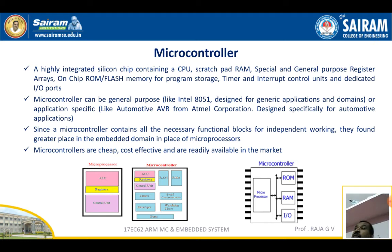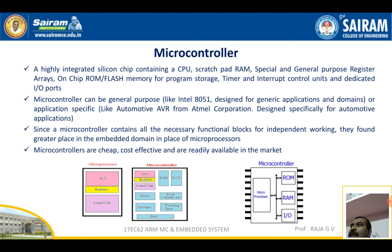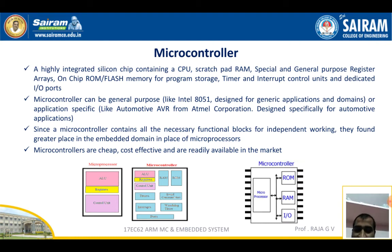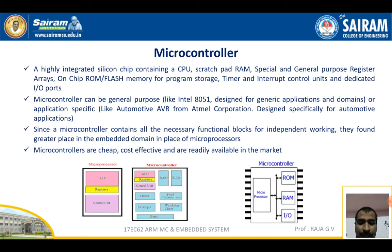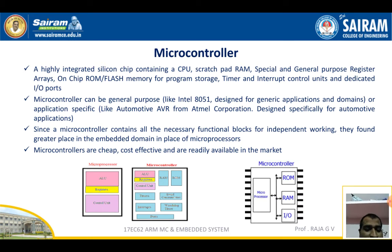Raspberry Pi is a very good example of a microcontroller — instead of carrying a laptop with keyboard and mouse separately, everything connects in one small compact unit. Microcontrollers are cheap, cost effective, and readily available in the market. The block diagram shows that a microprocessor consists of ALU, registers, and control unit, while a microcontroller includes ALU, registers, and control unit along with RAM, ROM, timers, serial communication, interrupts, watchdog timer, and I/O ports.